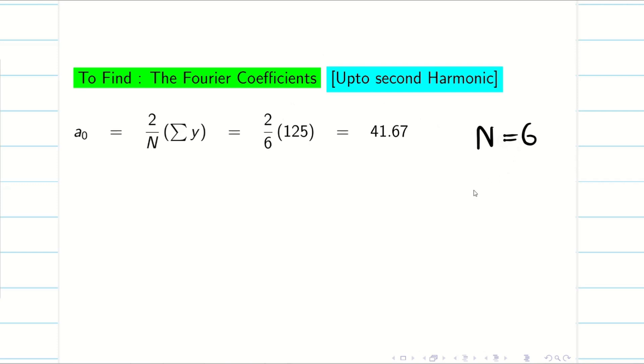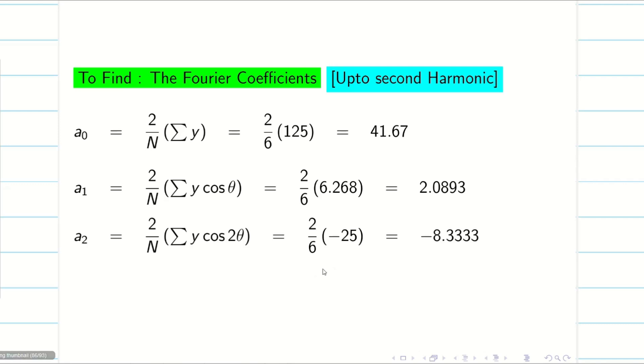Therefore, the Fourier coefficients, we are going to find 2 by 6. Because my n is 6, it is going to be 41.67. Similarly, 2 by n summation y cos theta, it is going to be 2 by 6, 6.268. You can use your calculator and find the values of a0, a1, and a2. Now, we need a0 by 2. We have to calculate 41.67 divided by 2.